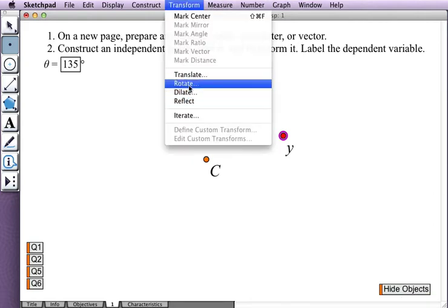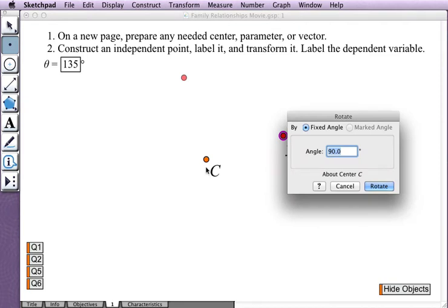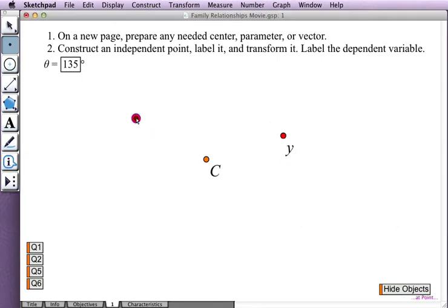From the Transform menu, I'll choose Rotate. Sketchpad marks C as the center point. I click on the angle theta to make it the angle by which the rotation takes place. Click Rotate to complete the rotation.